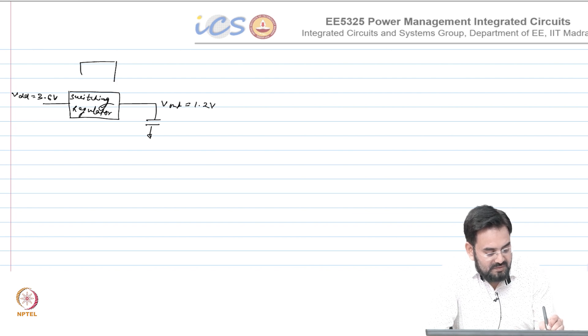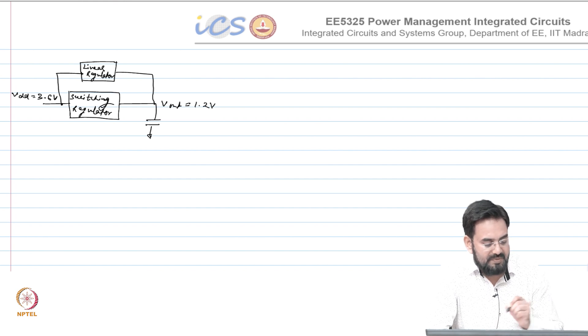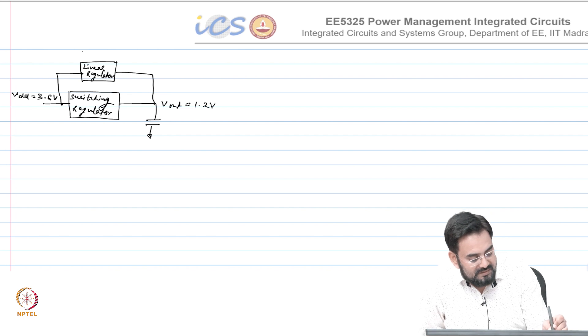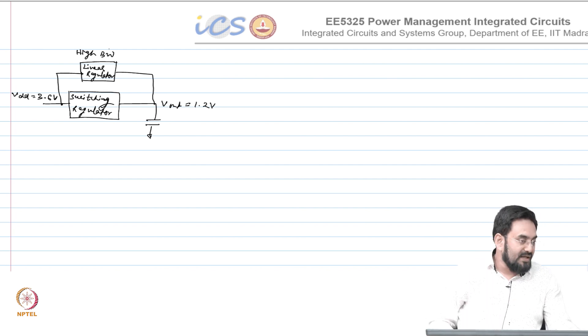Now this would not be LDO actually because dropout voltage would be much larger, so I will just call it linear regulator. If you make this regulator very high bandwidth and your switching regulator has limited bandwidth, you make your linear regulator bandwidth much larger than your switching regulator bandwidth.